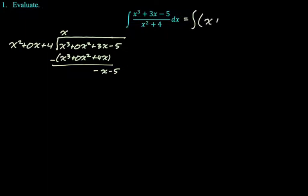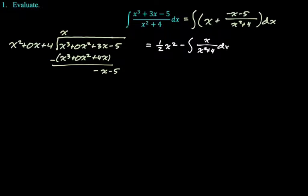So our integral becomes x plus our remainder over our divisor dx. So we got to integrate this. Integral of x is 1 half x squared. I'm going to break this up into two separate integrals. So I'm going to say minus the integral of x over x squared plus 4 dx. And then also minus 5 the integral of 1 over, and I'm rearranging it because that's an arc tan. So 1 over 4 plus x squared dx.